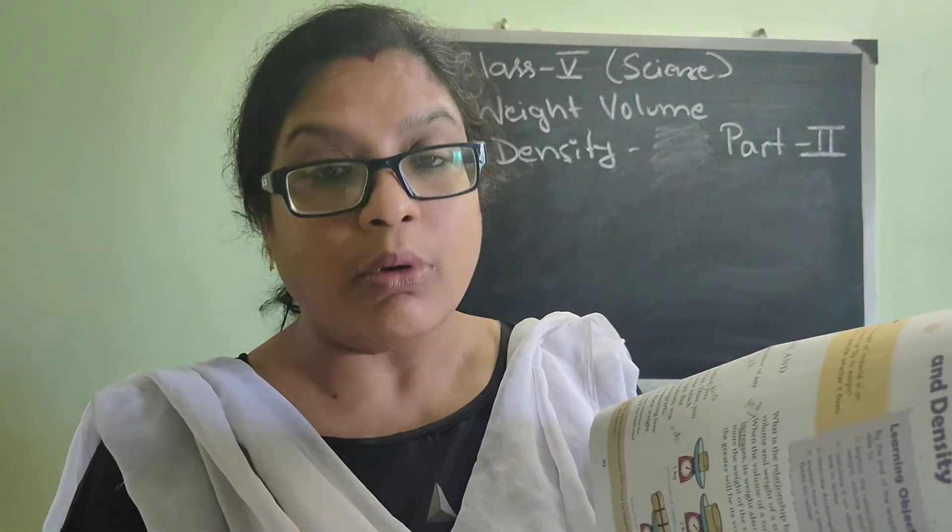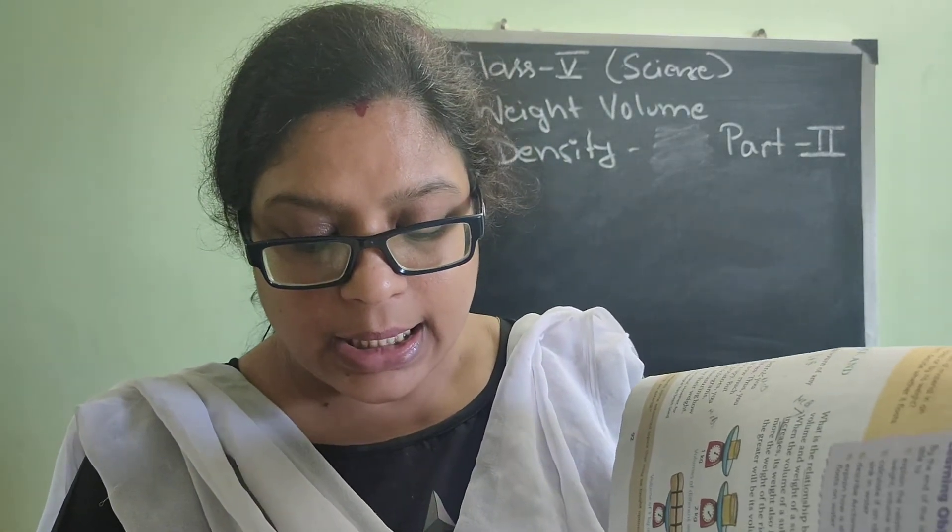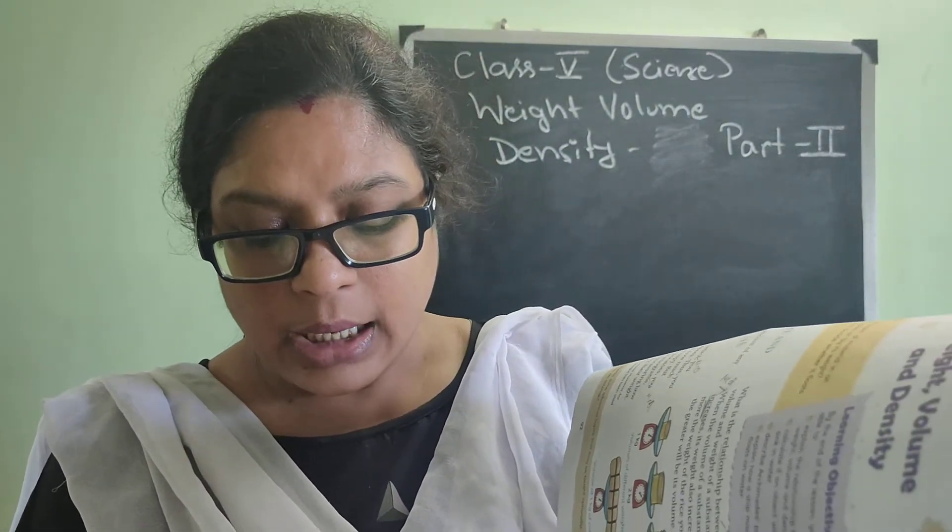The density of wood, cotton wool, and wax are less than 1 kg per litre, so these substances float in water. Why do they float? Because their density is less than 1 kg per litre. If the density is more, it will sink; if the density is less, it will float. That is why wood, cotton, and wax float.